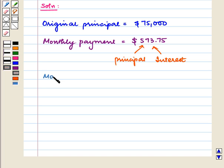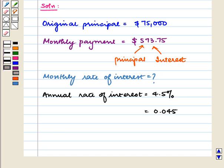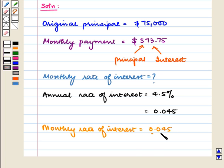Now let us calculate the monthly rate of interest. The annual rate of interest is equal to 4.5%, which is equal to 0.045. So the monthly rate of interest is equal to 0.045 divided by 12, which is equal to 0.00375.